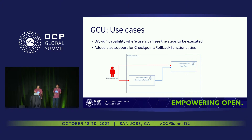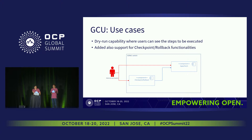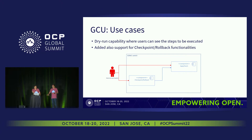Going forward, the main GCU use case is to apply the patch. We have a couple of other use cases also, like checkpointing — basically to take a checkpoint of the config DB currently in use — and do a rollback. Another interesting feature is the dry run capability, where the user can try applying the patch onto the config DB without actually putting it onto the DB. That is an optional flag to the CLI command.